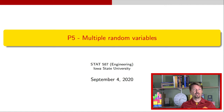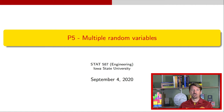Hi, I'm Dr. J, and this is a video about multiple random variables. We've talked in previous videos about multiple random variables, but we've always assumed that they are independent. Today's video is going to talk about what you do when you have random variables that are not independent. We're going to start with discrete random variables, and at the very end we'll touch briefly on continuous random variables.